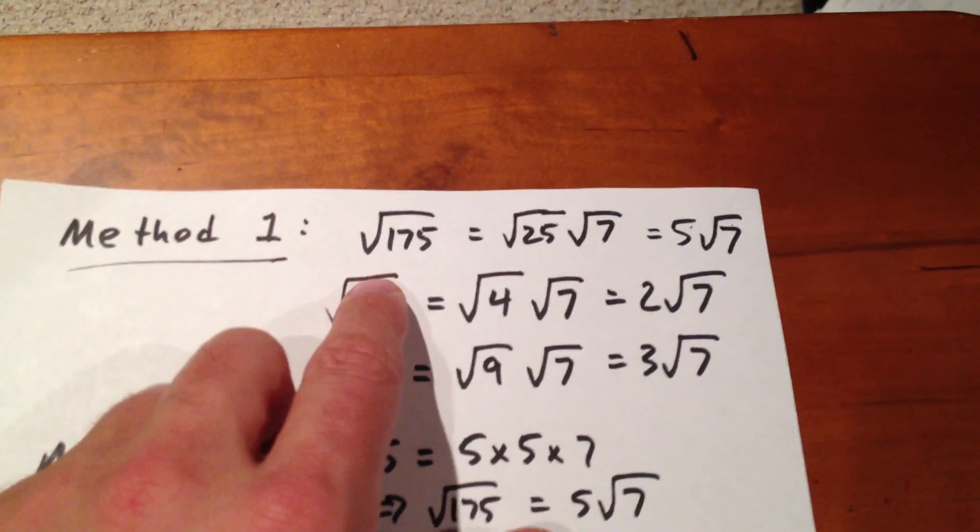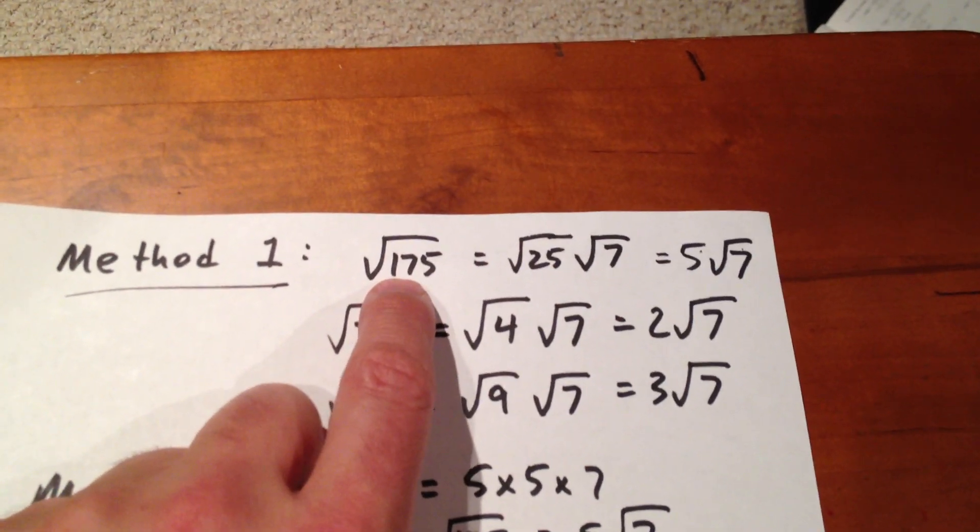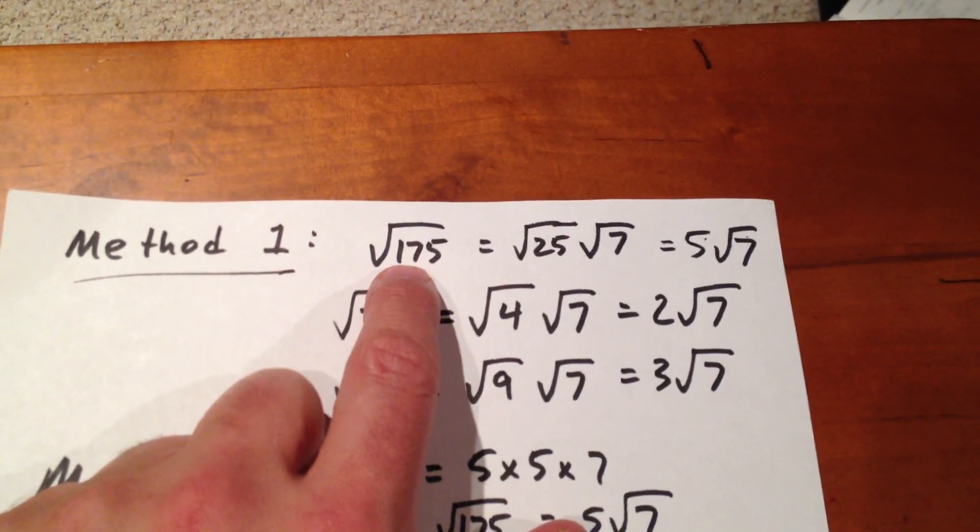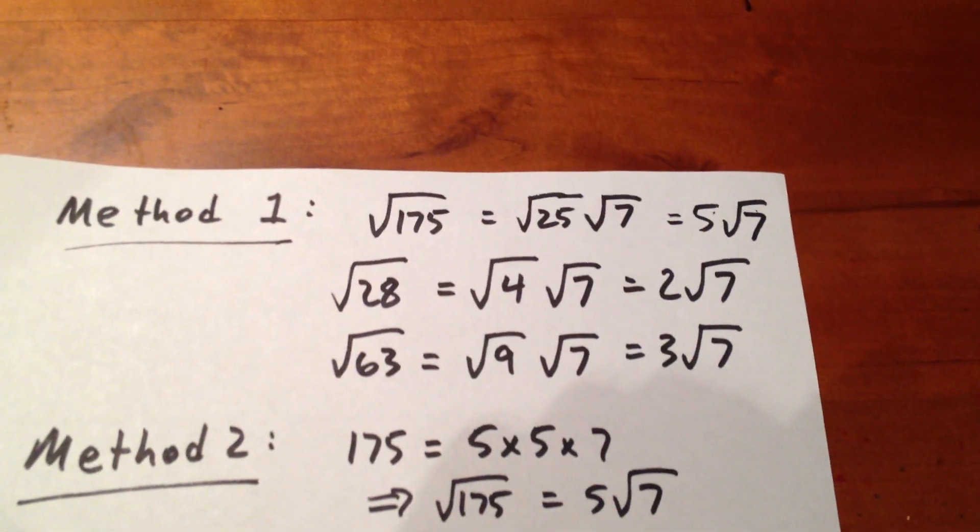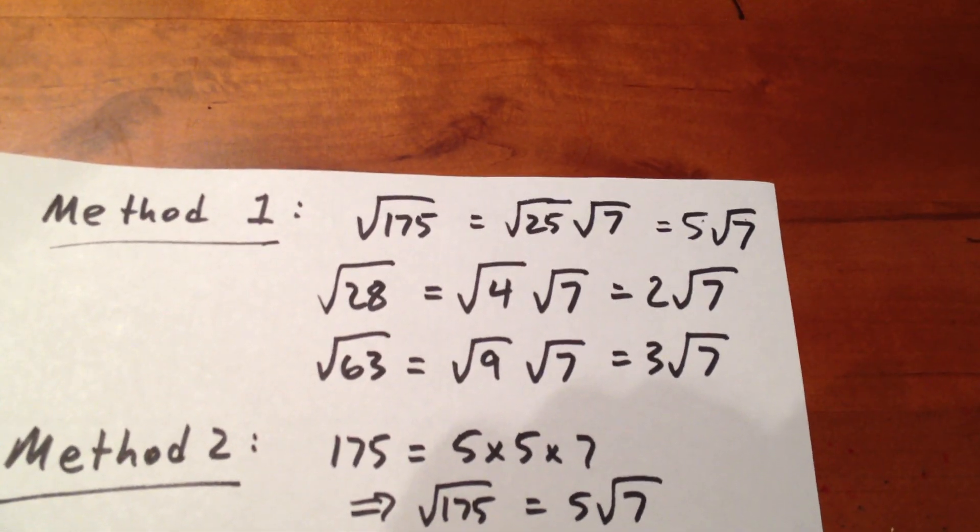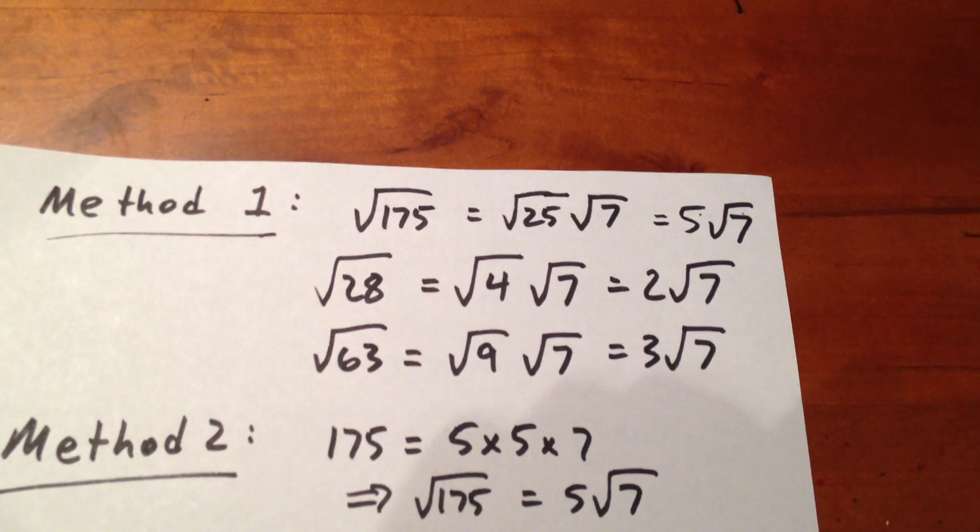Under method 1, we see that a perfect square of 25 divides evenly into 175, meaning that root 175 is root 25 root 7, or in other words, 5 root 7.